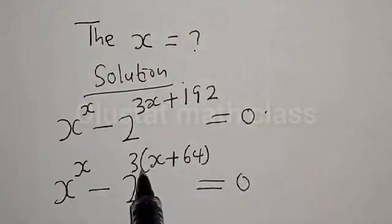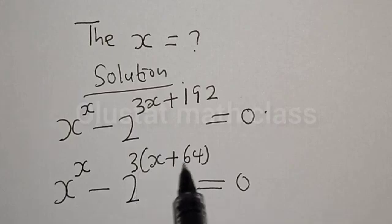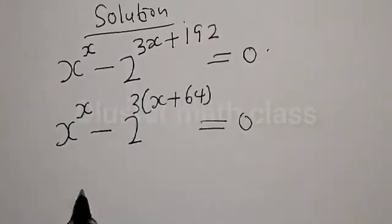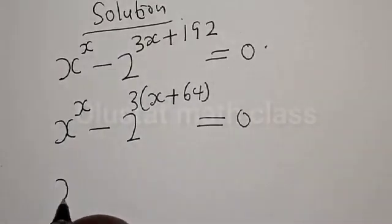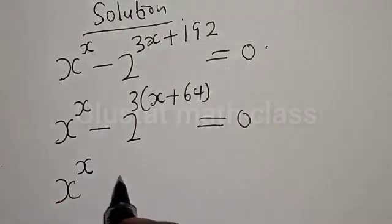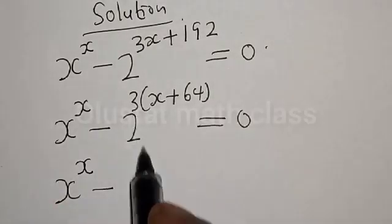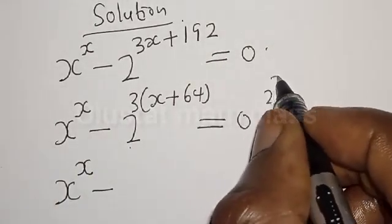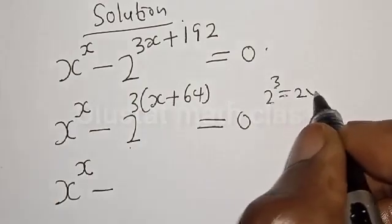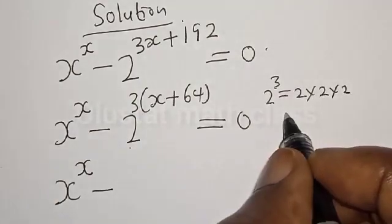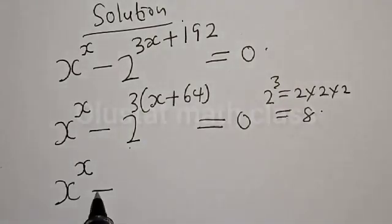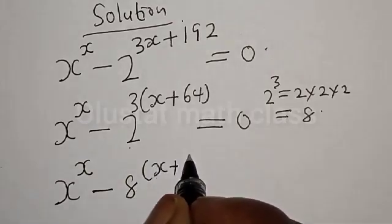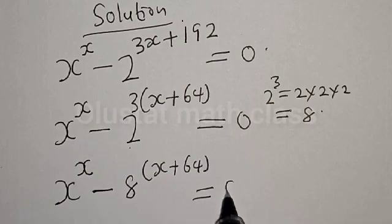We factor to get 3 times s plus 64 is equal to 0. Because if you open the bracket, that is 3 times s is 3s, then 3 times 64 is 192. Now, remember, 2 raised to power 3s can be expressed as 2 raised to power 3, which equals 8. So we have minus 8 times s plus 64 is equal to 0.